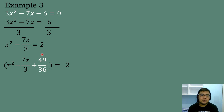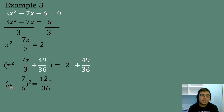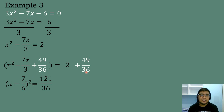We add positive 49 over 36 to both sides. Since this is a perfect square trinomial, we can factor it. The square root of x squared is x, and the square root of 49 over 36 is 7 over 6. Taking the sign of the linear term, which is negative, the factor is the quantity x minus 7 over 6 raised to the second power. Then 2 plus 49 over 36 equals 121 over 36.